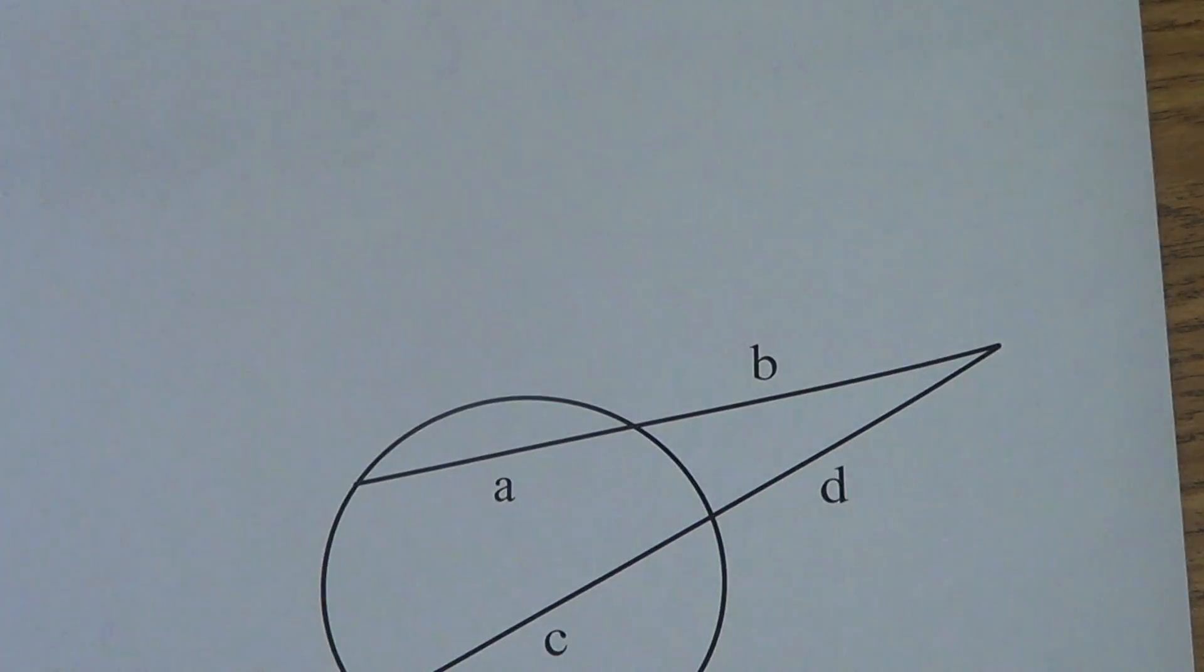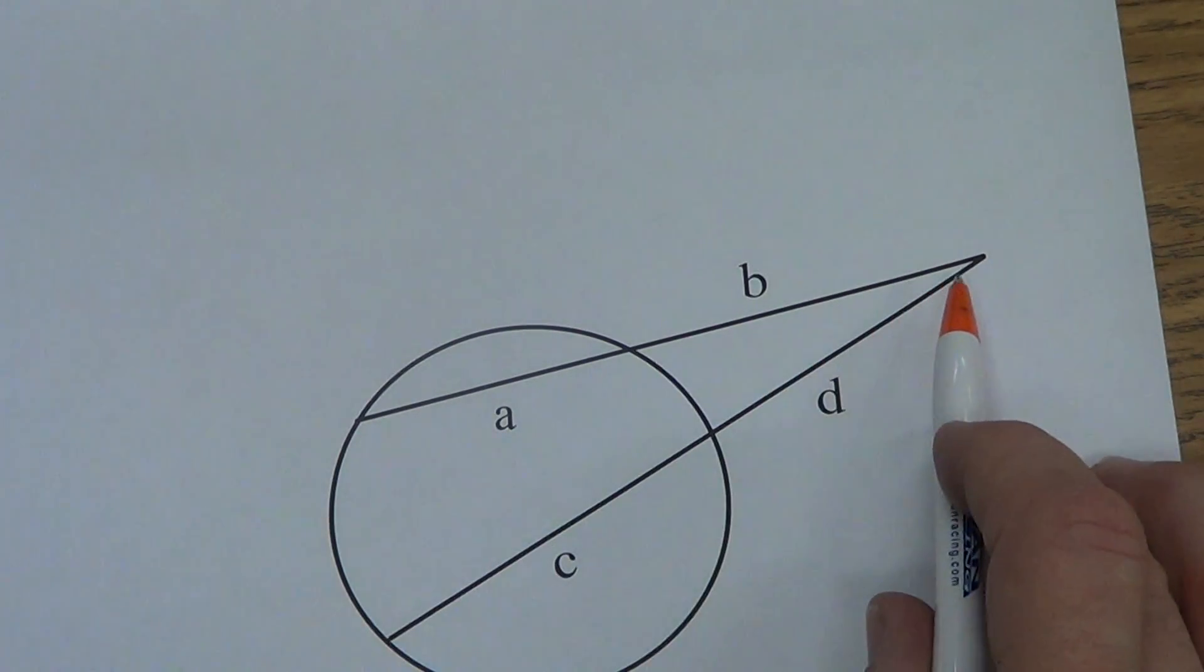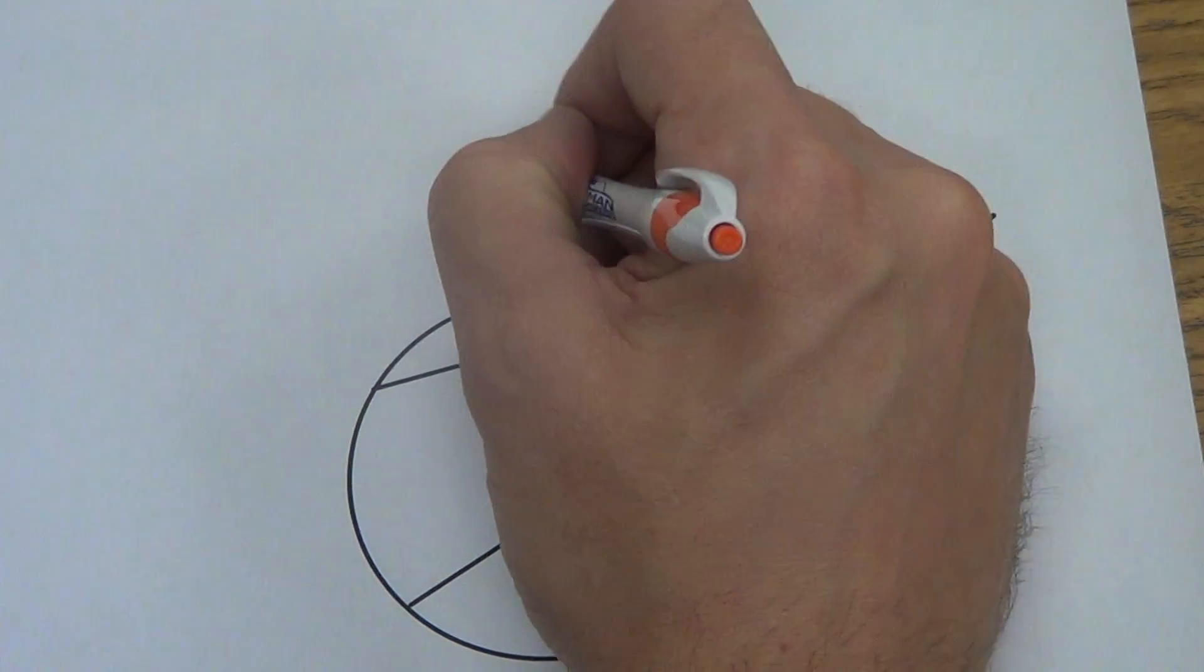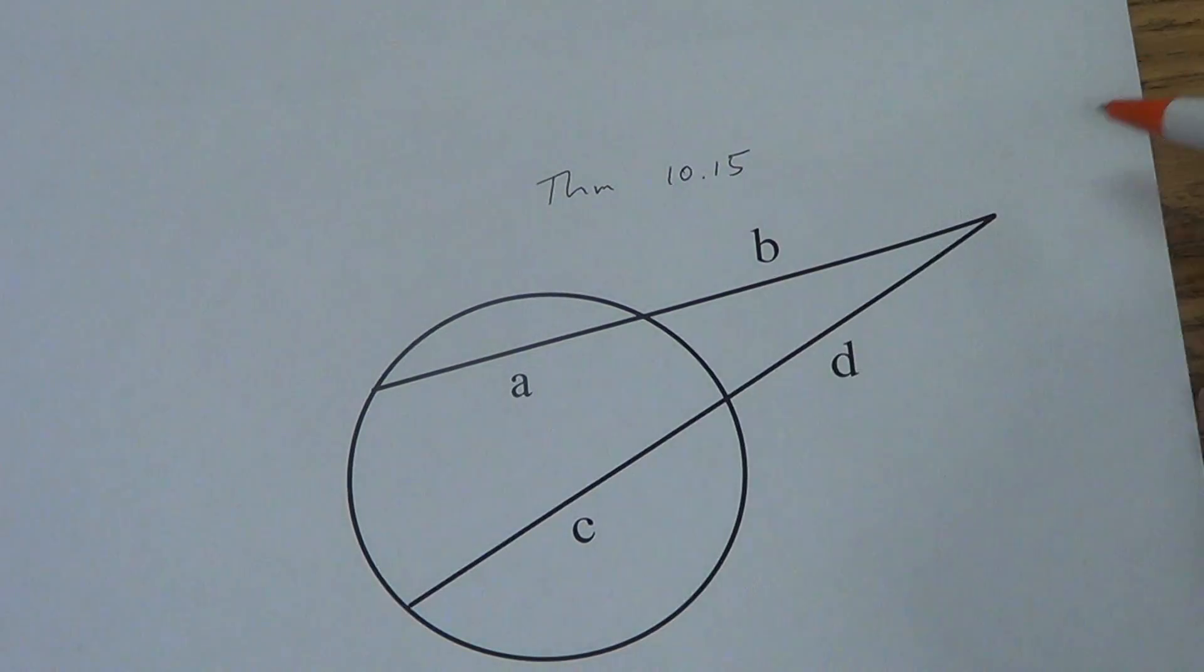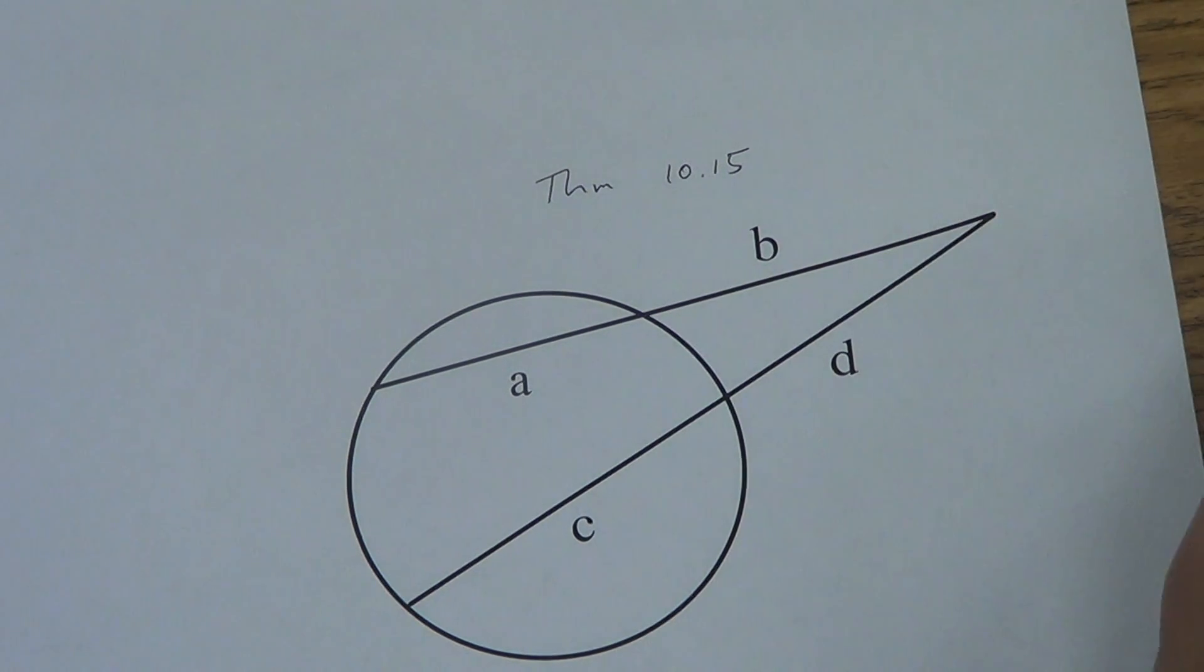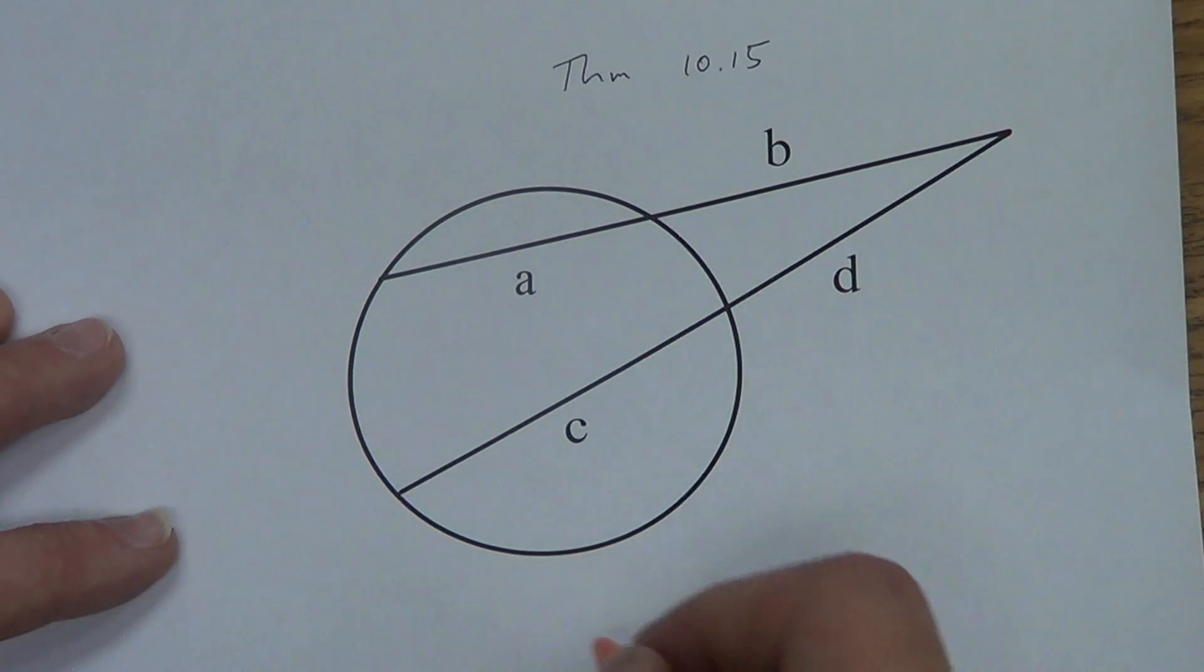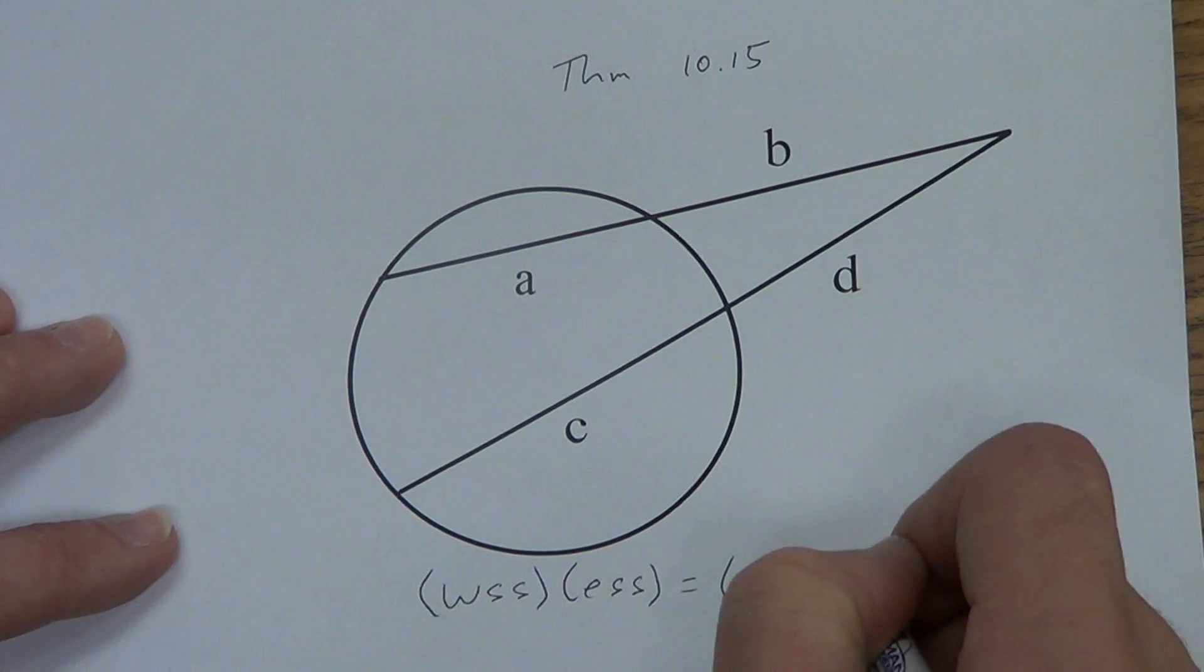Theorem 10.15 is the next one. It looks something like this. We have what are called secant segments. A secant line is a line that intersects a circle twice. The segment, we just kind of stop the thing here and here and then we work off of that. Here's what the theorem in your book says. This by the way is theorem 10.15. It says if two secant segments share the same endpoint that's out here outside a circle, then the product, so we're going to be multiplying again, the product of the lengths of one secant segment and its external segment equals the product of the lengths of the other secant segment and its external segment. What in the world are they saying?